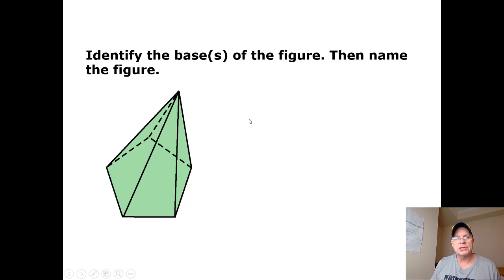This one, what do you think - prism or pyramid? And if you're unsure, you ask yourself: does it have one base or two? As soon as you see that it has one base, then you know it's a pyramid. And then the type of pyramid just depends on, well, what is the base? How many sides does the base have?